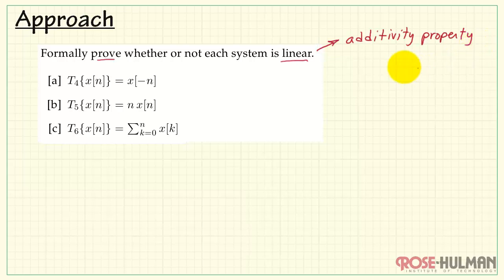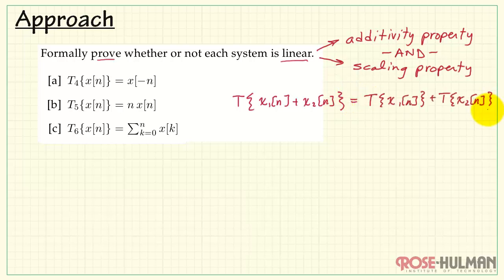We need to establish what's called the additivity property as well as the scaling property. The additivity property says that a system operating on the sum of two input signals, X1 and X2, can also be written as the system operating on each of these input signals and then added together. The scaling property says that we can take a scaled version of an input, operate on that, and it's the same thing as first operating on the input and then scaling it.